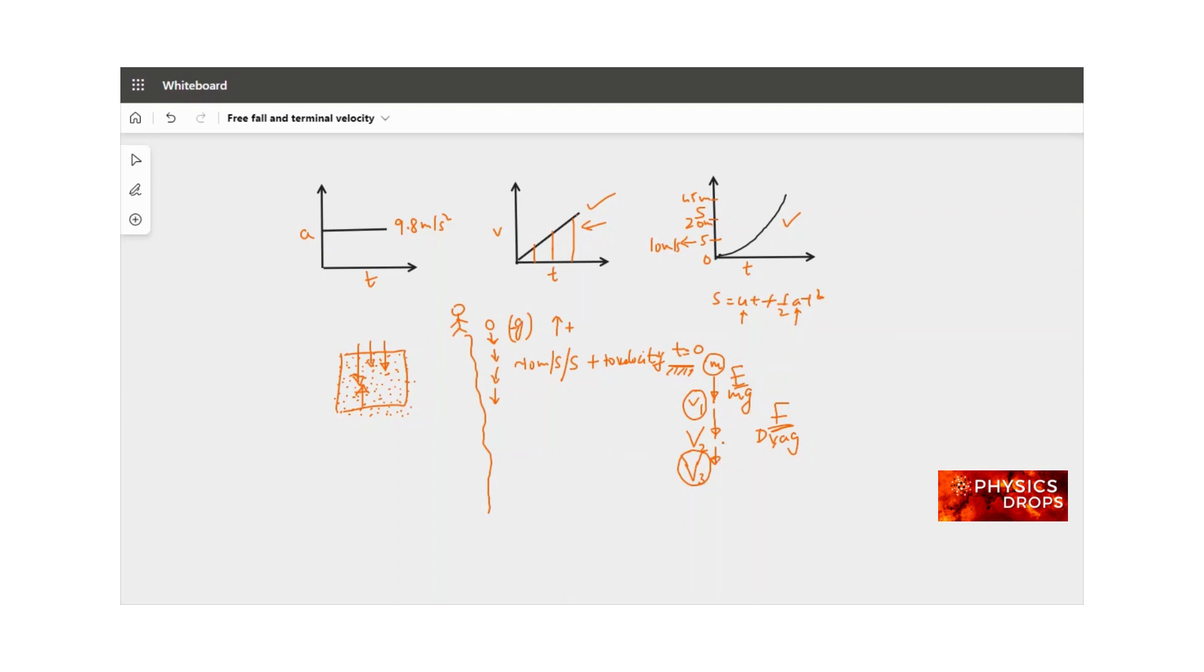Velocity keeps increasing, which means v3 pushes more air and gets pushed back more. So if we draw mg, it's always going to be the same because mass is not changing and g is not changing.